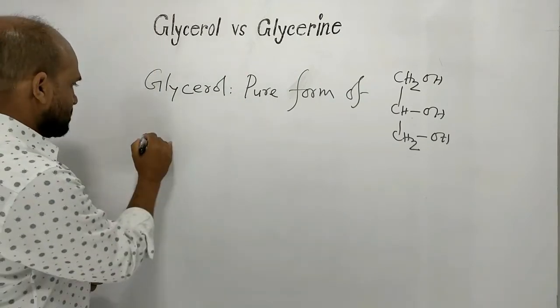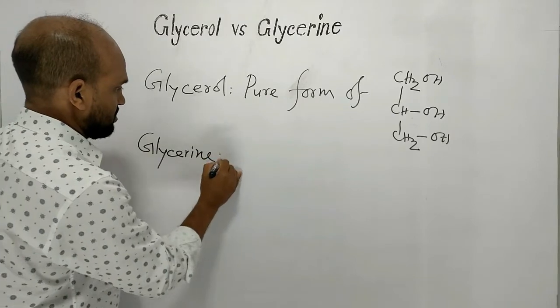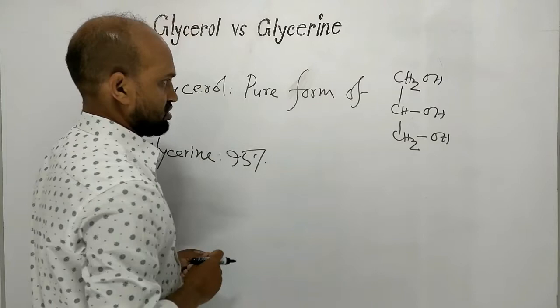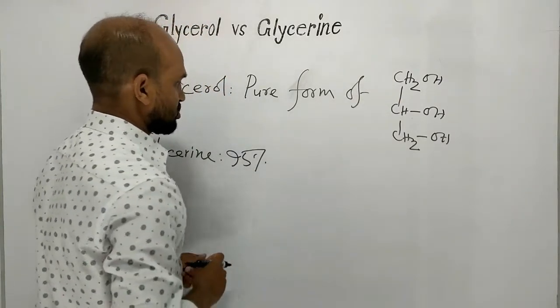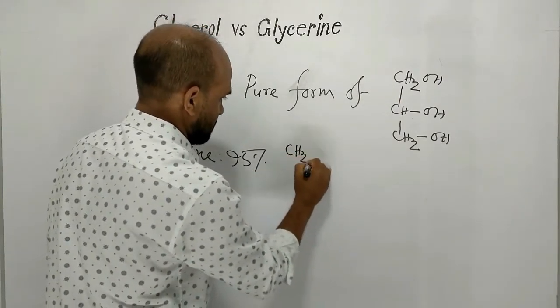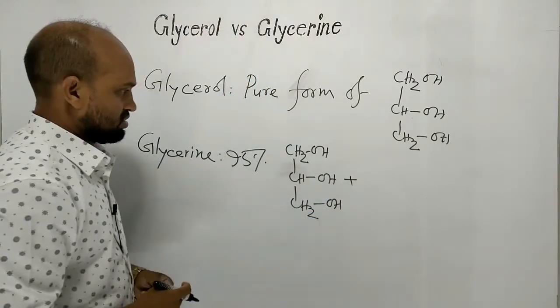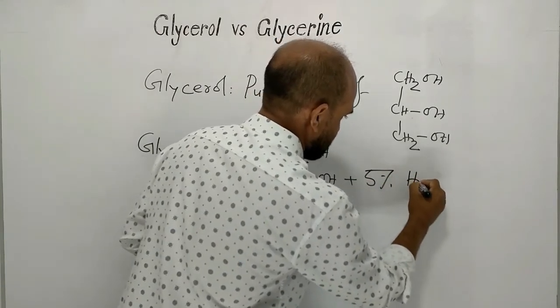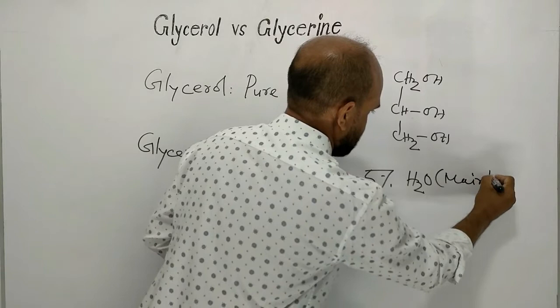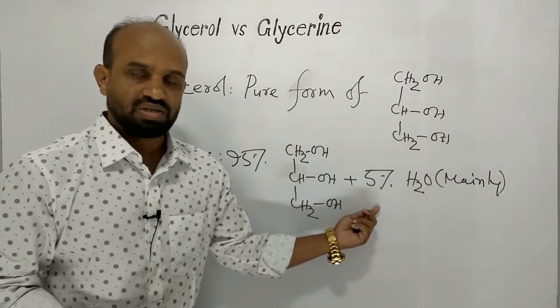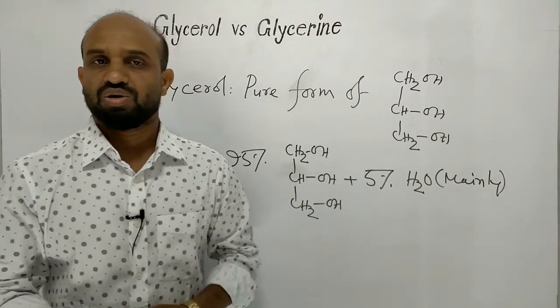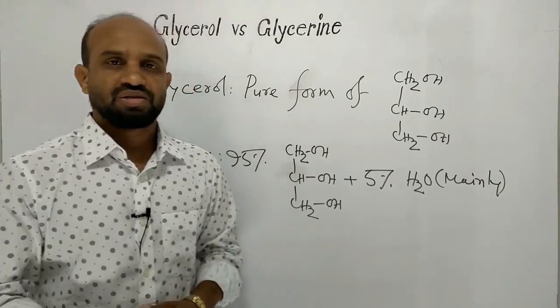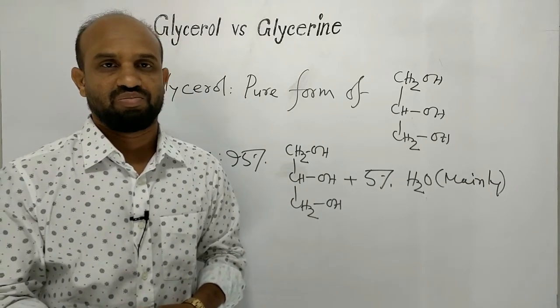Now let's see glycerin. 95% this compound, that means 1, 2, 3-trihydroxy propane, and it contains 5% water mainly. It might contain additionally perfume or fragrance. That means glycerin is slightly diluted form of glycerol.